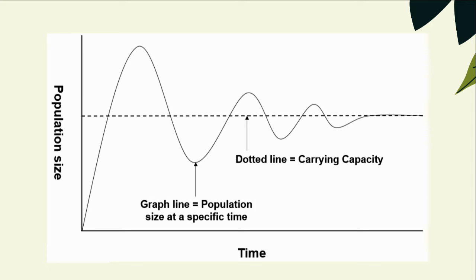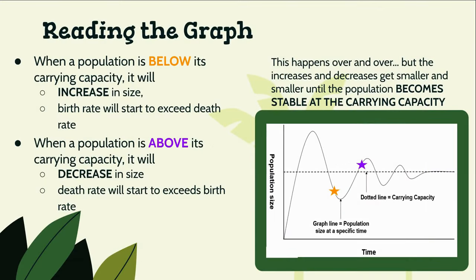There may not be enough food to go around, animals may be in direct competition, or there may be viruses spreading through the population. But the population will always get back to where it needs to be to match its carrying capacity. As time goes on, the population may be below or above its carrying capacity, but it will always return to meet it.